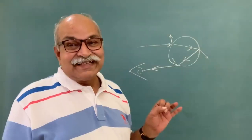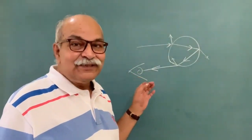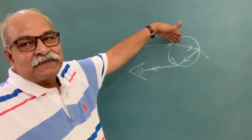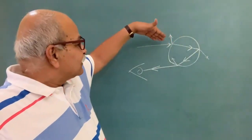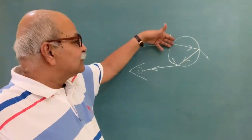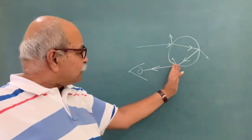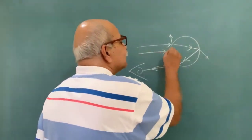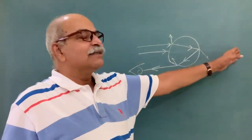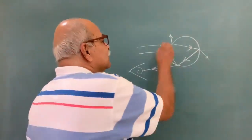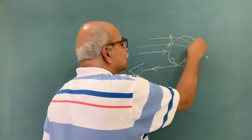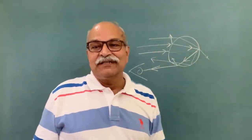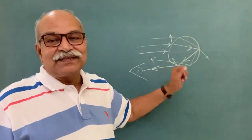Now, one extra piece of information which is generally not in the textbook: depending on where on the drop this sunlight is falling, the direction from which you receive the light will be different. Because if it falls right at the center, everything will just go away normally — nothing will reach you. But if it falls somewhere off-center, there will be some refraction and at some other angle it will come out. So the angle at which it comes depends on where on the drop the sunlight is falling.